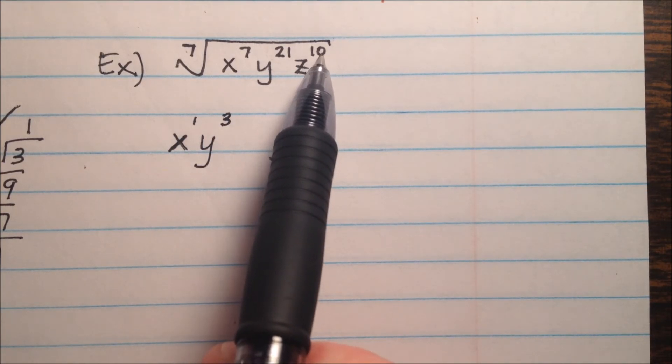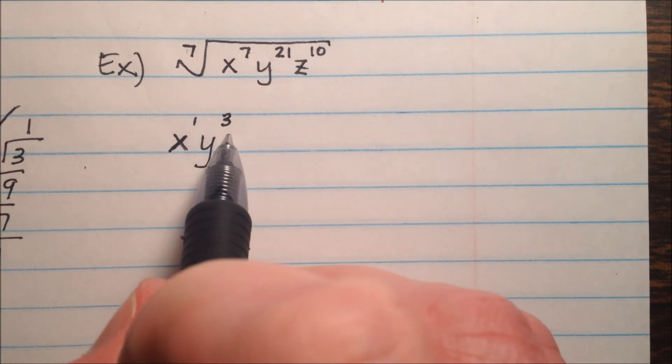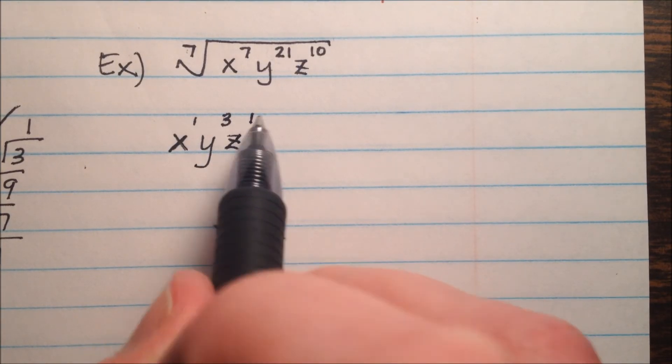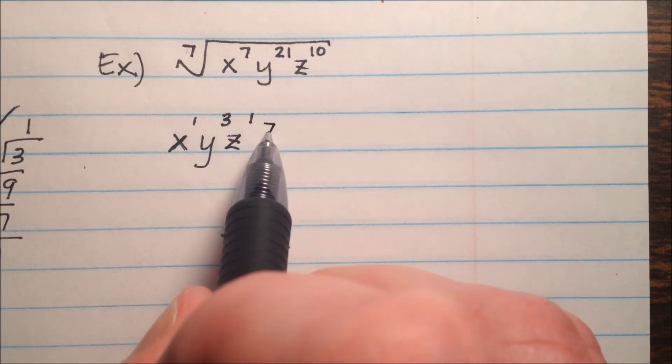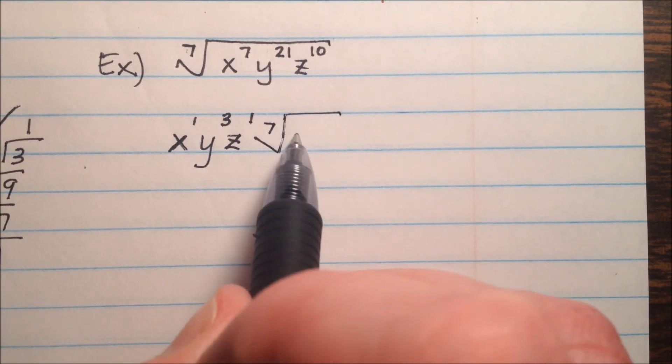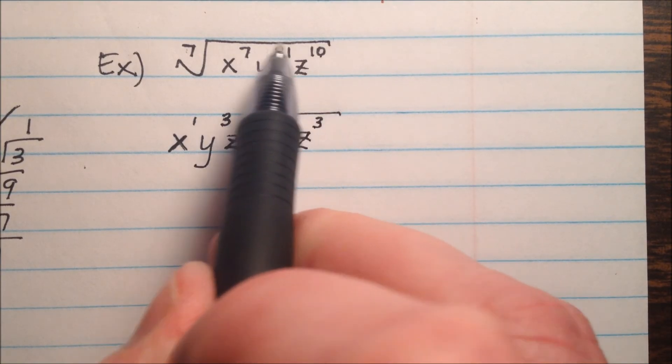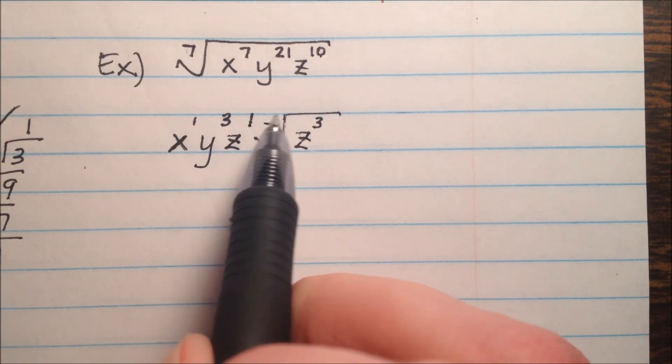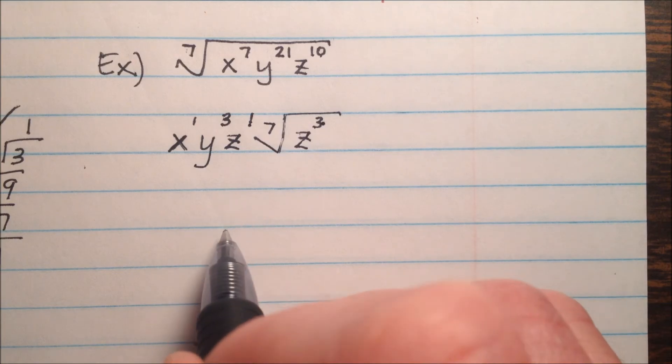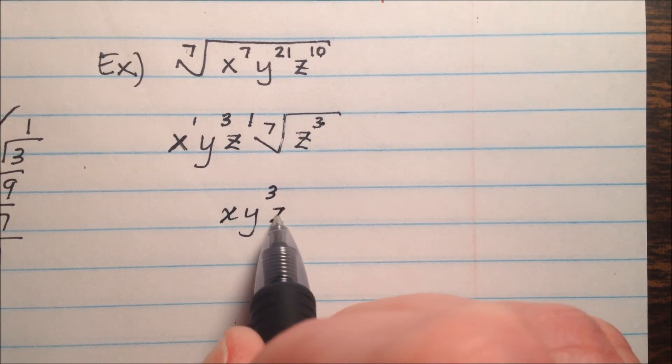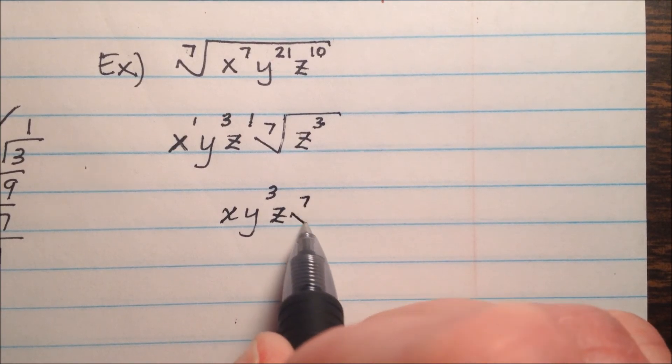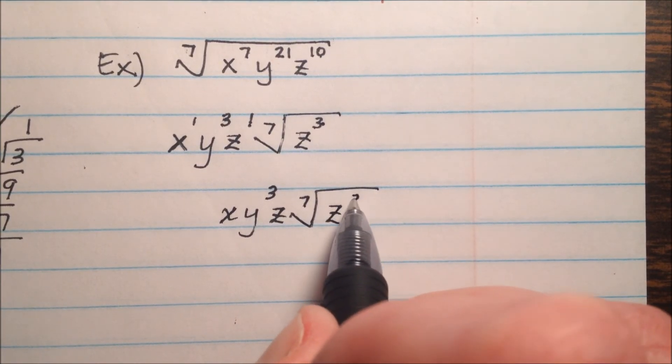On the z, however, we have 10 divided by 7, which is going to give me 1, with how many left over? There'll be a remainder, and in fact, the remainder will be 3, right? Because 10 divided by 7 is 1, remainder 3. So my final answer, then, is xy cubed z times the 7th root of z cubed.